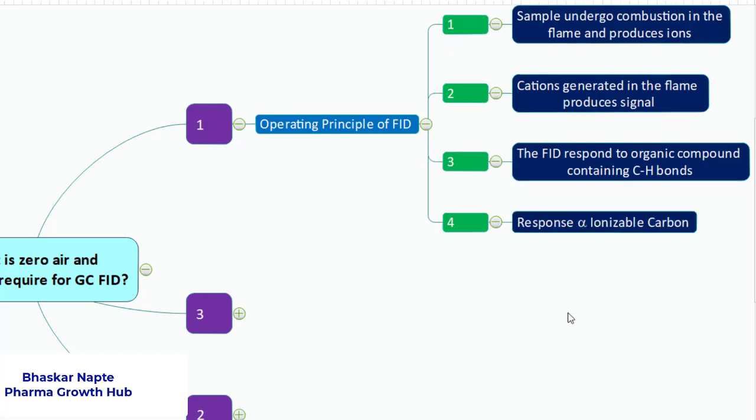And the last point is what is the response of the FID? The response of FID is directly proportional to the ionizable carbon molecules present in a sample. That means if you want to compare the response of methanol and ethanol, which compound will give more response? Obviously ethanol as compared to methanol. Why? Because ethanol contains twice the carbon as compared to methanol. So this is the way the FID works.